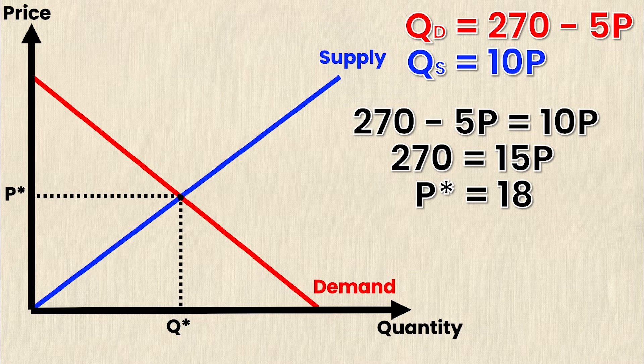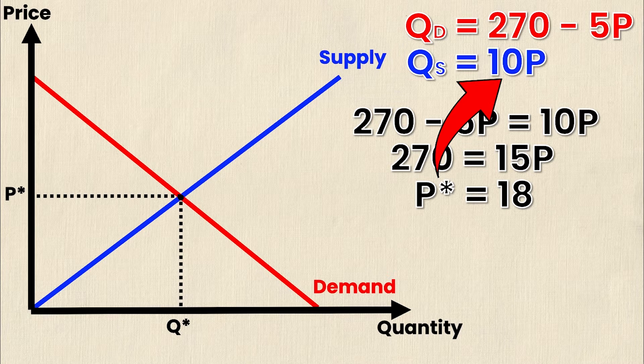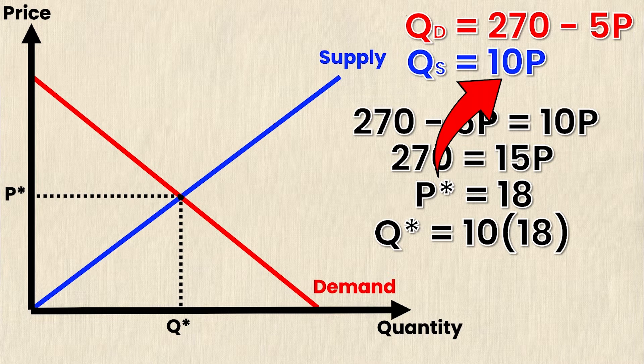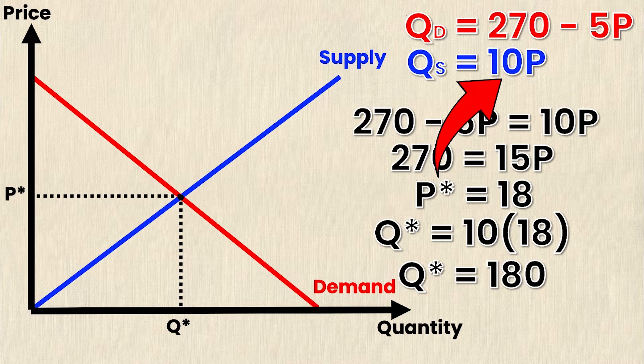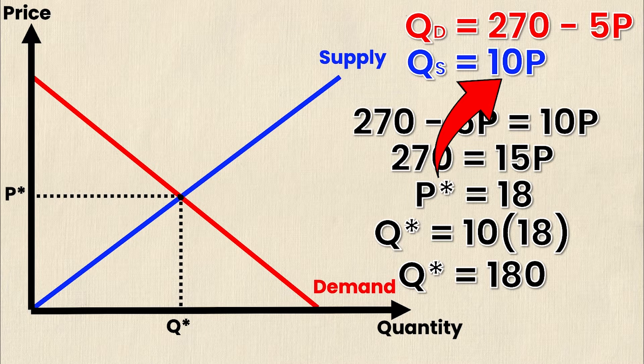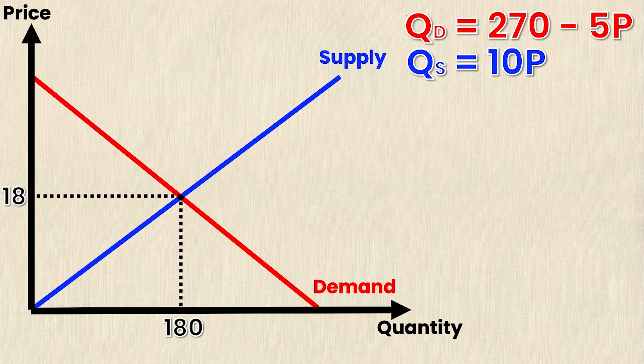I'm going to take this P star and substitute it into one of my equations. In this case I'm going to choose quantity supplied since it's an easier equation to solve. So Q star equals 10 times 18, and 10 times 18 is 180. So now I have my Q star and my P star so I'm going to sub those in on my graph.